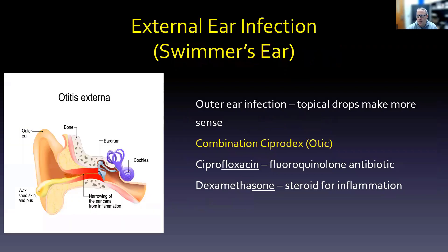Let's get started with what is maybe better known as swimmer's ear, but technically an external ear infection. When you have an infection on the outer ear, it makes sense to just use drops and put something on it. You can use an antibiotic to take care of the infection, but there's also going to be some inflammation. So we use a steroid. The medication we can use is something like Ciprodex, which is a combination of ciprofloxacin — the floxacin ending tells us it's a fluoroquinolone antibiotic, the FL is for fluoro and the oxacin is for quinolone — and dexamethasone. We've seen that sone ending before; that's a steroid for inflammation.